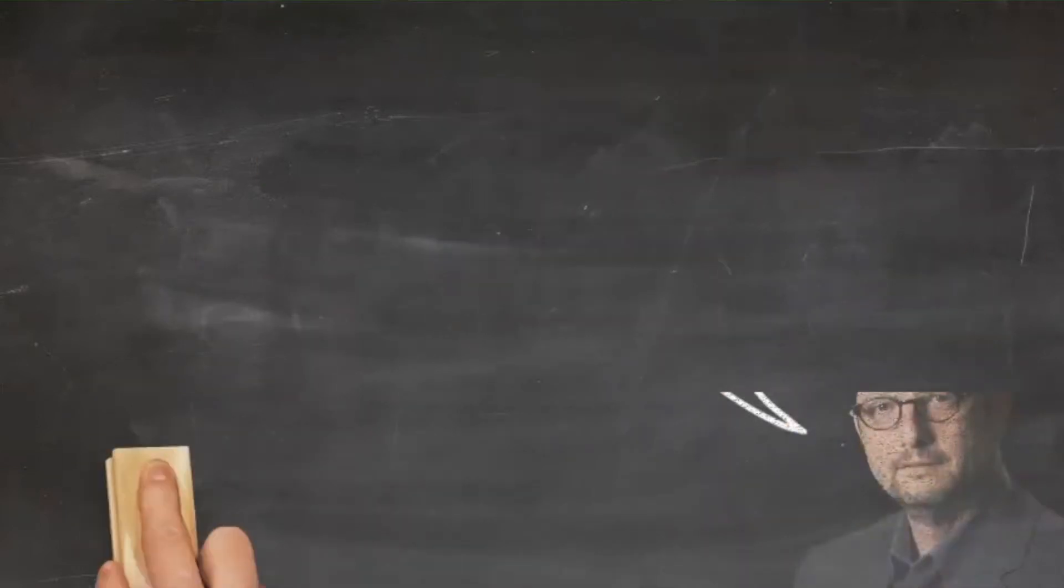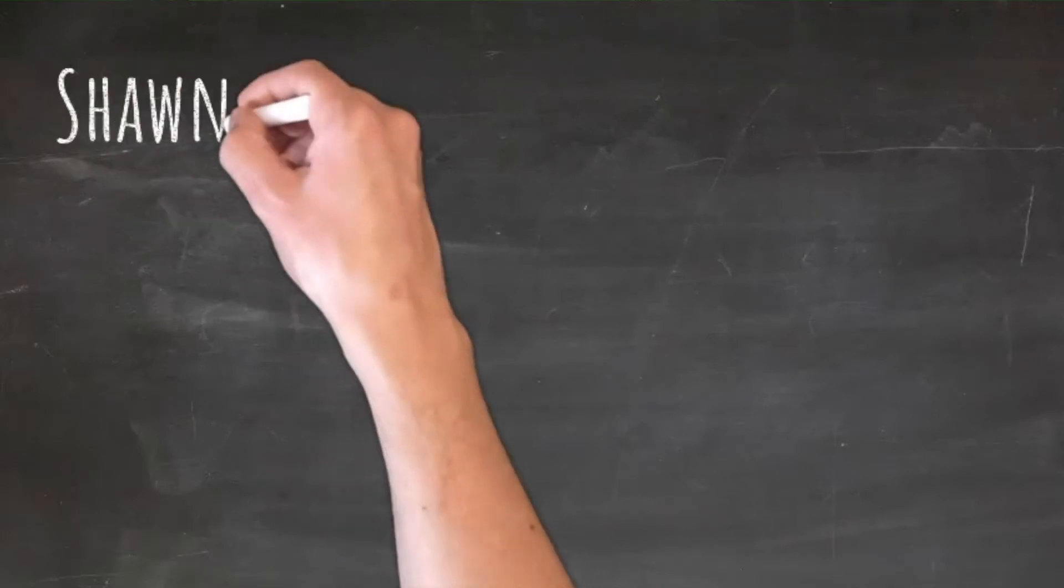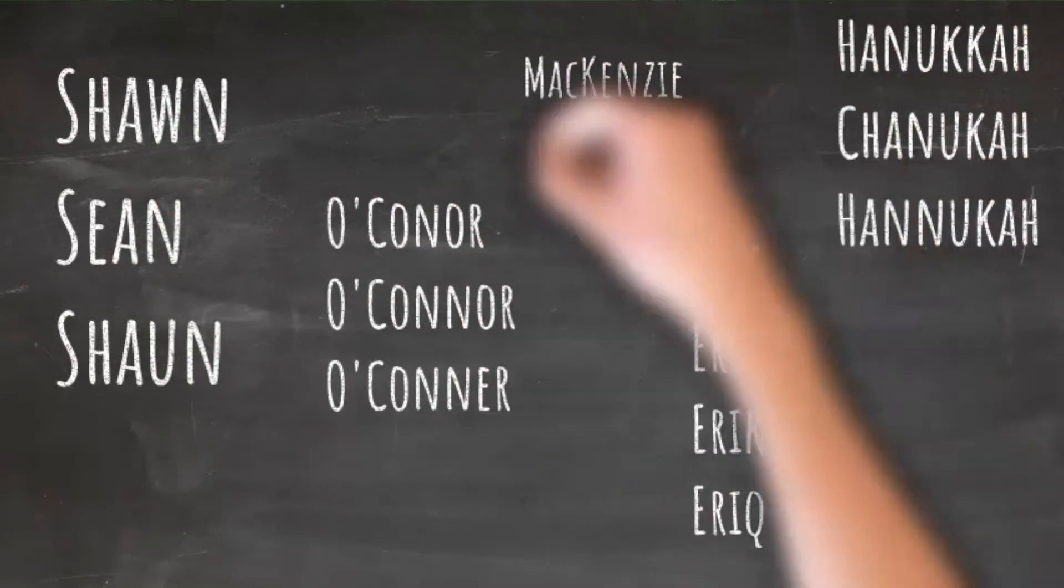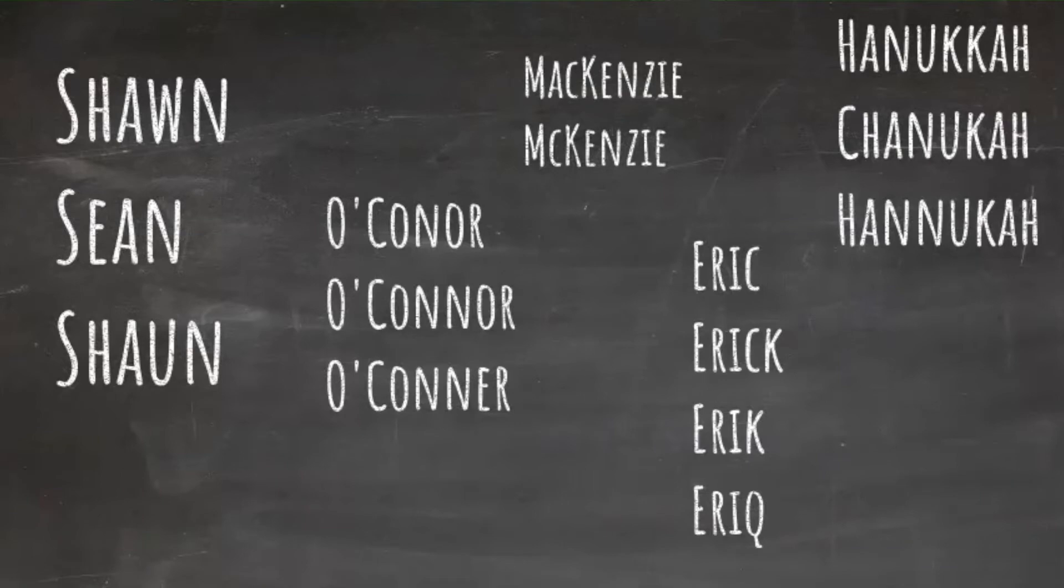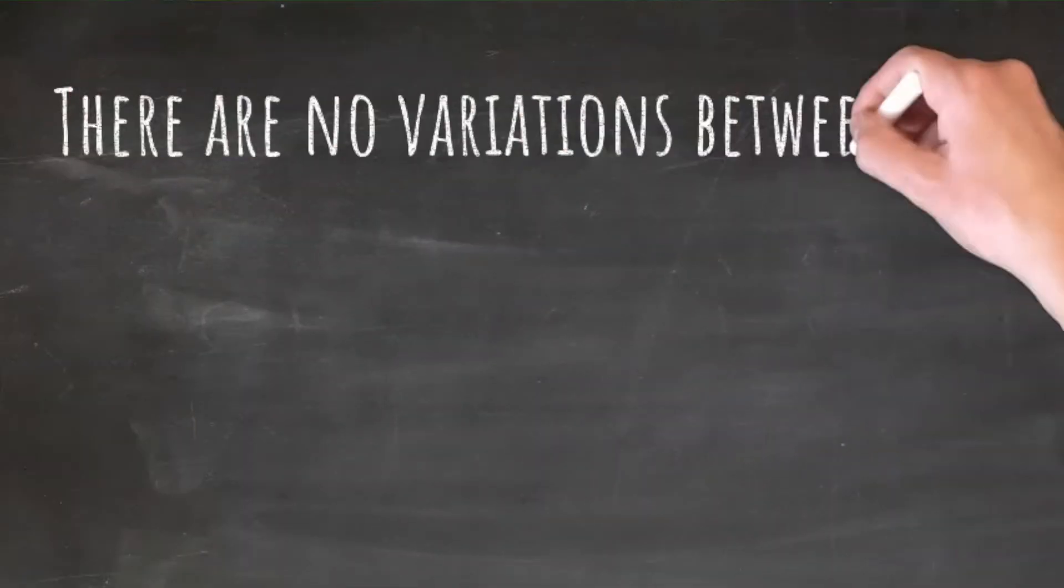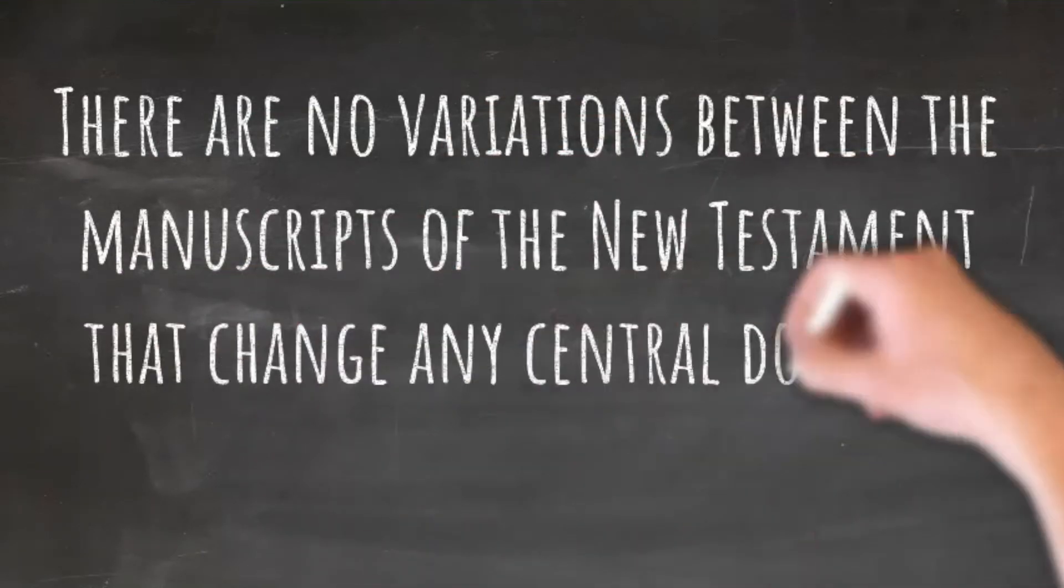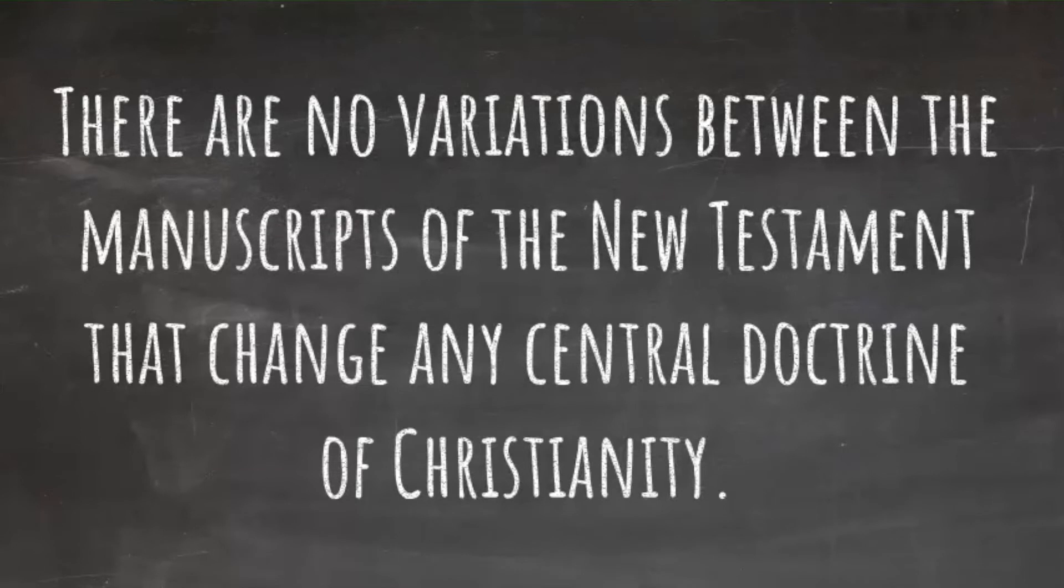But here's the deal. Over 70% of those variations are spelling differences, like spelling the name of John in Greek with one N or two Ns. Those aren't meaningful differences. They don't change our understanding of the text. In fact, only about 1% of all the variations would have any effect on the meaning of the text. But listen to this: there are no variations between the manuscripts of the New Testament that change any central doctrine of Christianity, not one. None of our theology is changed by these variations.